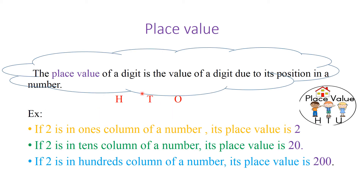Now let us learn what place value is. The place value of a digit is the value of a digit due to its position in a number. We are learning three-digit numbers here, so we have the 1's place, 10's place, and 100's place. For example, if 2 is in the 1's place, its place value is 2 ones, which is 2.